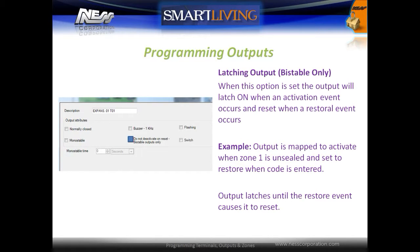The latching output option is for a bistable output only. When this option is on, an activation event will cause the output to switch on, and the output will only switch off when a restoral event occurs. For example, if the output is mapped to activate when zone 1 is unsealed and set to restore when a code is entered, the output latches on until the restoral event resets it. Programming of this is done under the events section.